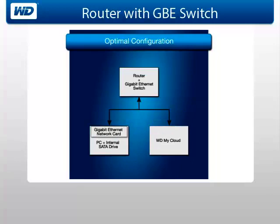For the next example, if you're using a router with an internal gigabit ethernet switch, connect the router to both the personal computer that contains the gigabit network interface card and the network drive.